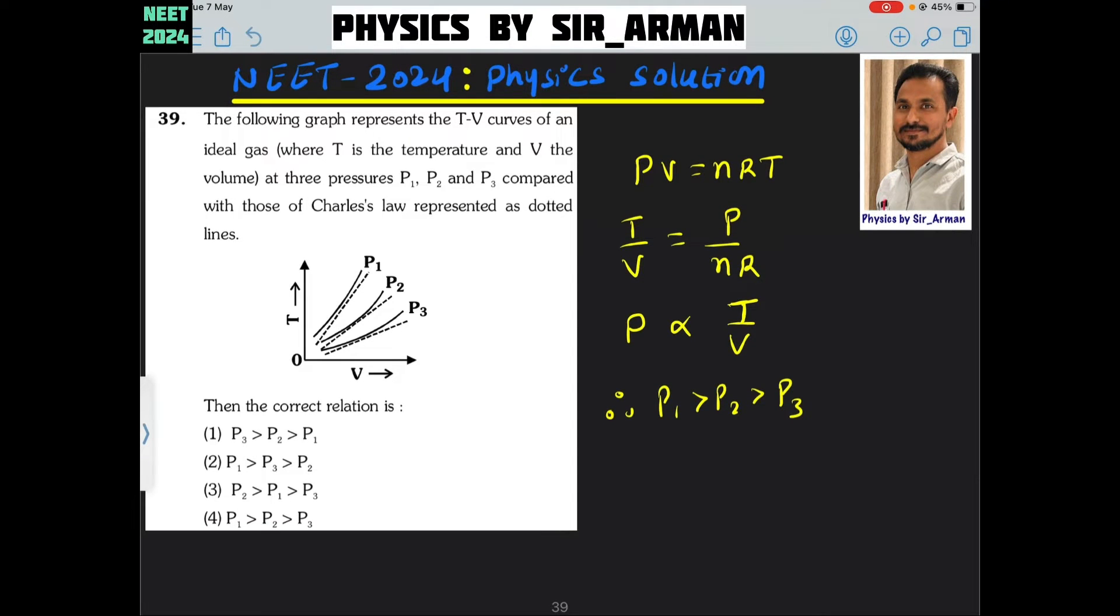Question number 39. The following graph represents T-V curves of an ideal gas. We have to identify which graph shows the highest pressure, or we have to arrange the pressures in increasing or decreasing order. This means we have to verify which one of the given options is correct.